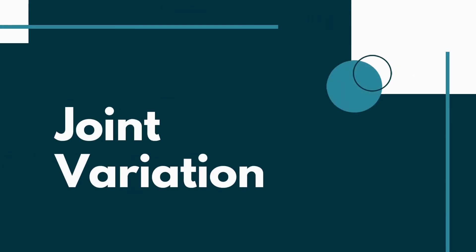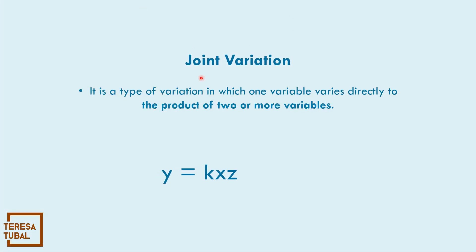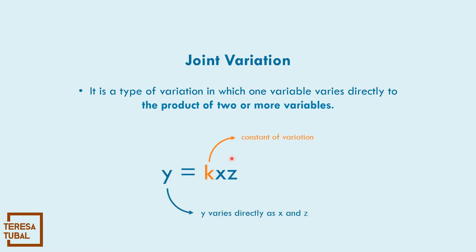Let us discuss joint variation. What is joint variation? It is a type of variation in which one variable varies directly as the product of two or more variables. y equals kxz is read as y varies directly as x and z, or y varies jointly as x and z. The value of k is the constant of variation. We have two variables, so it must be the product of two or more variables to become joint variation.